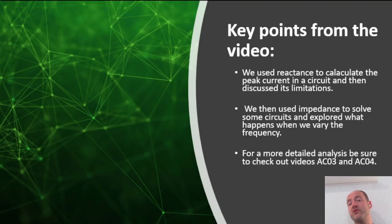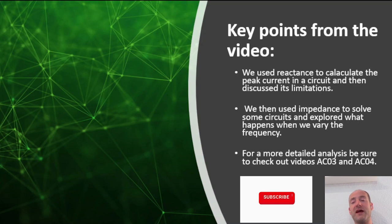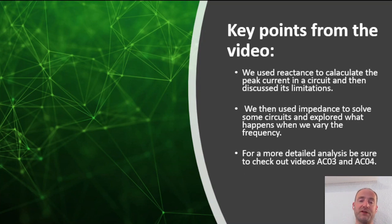To summarize: we used reactance to calculate the peak current in a circuit and discussed its limitations regarding phase. We then used impedance to solve circuits and explored what happens when we vary the frequency. For a more detailed analysis, check out videos AC3 and AC4. If you liked this video, please like and subscribe, and put any questions in the chat. Thanks for watching.